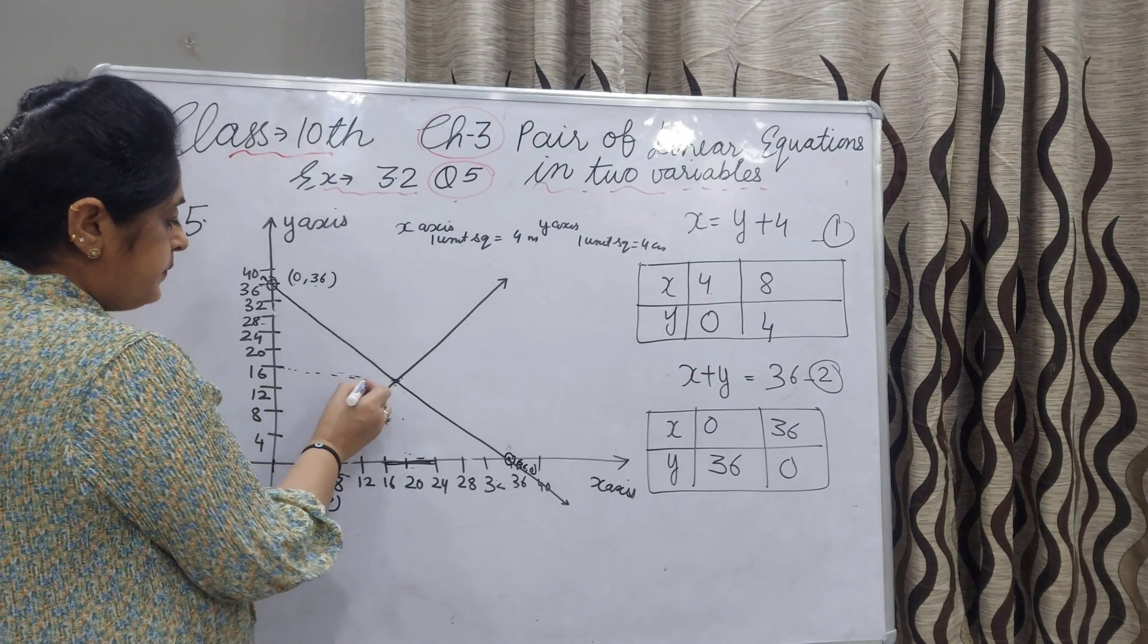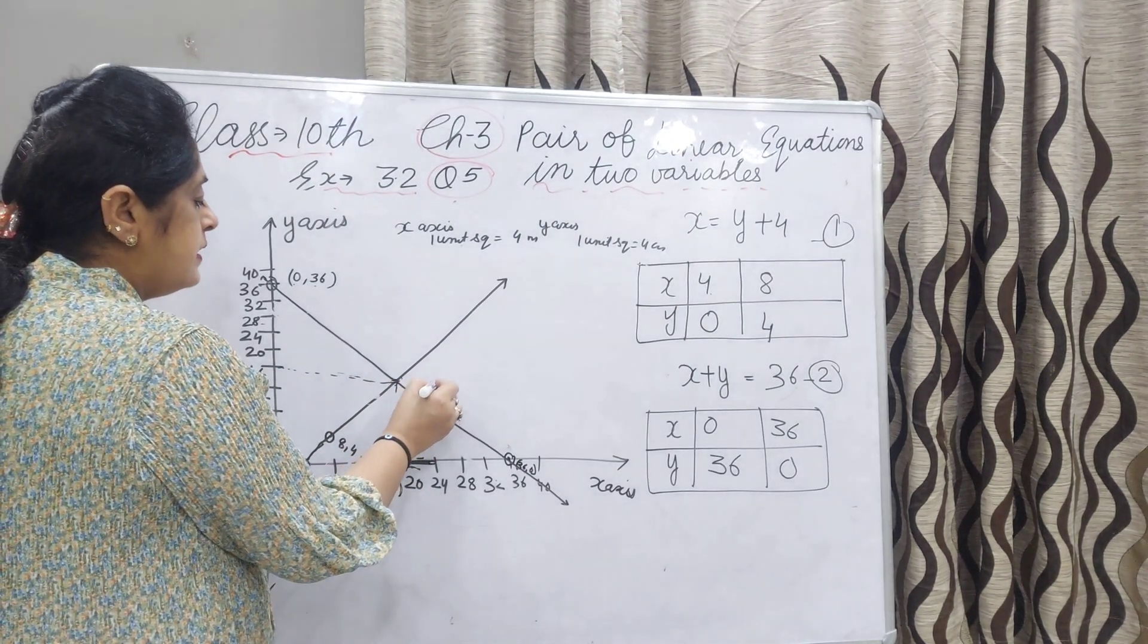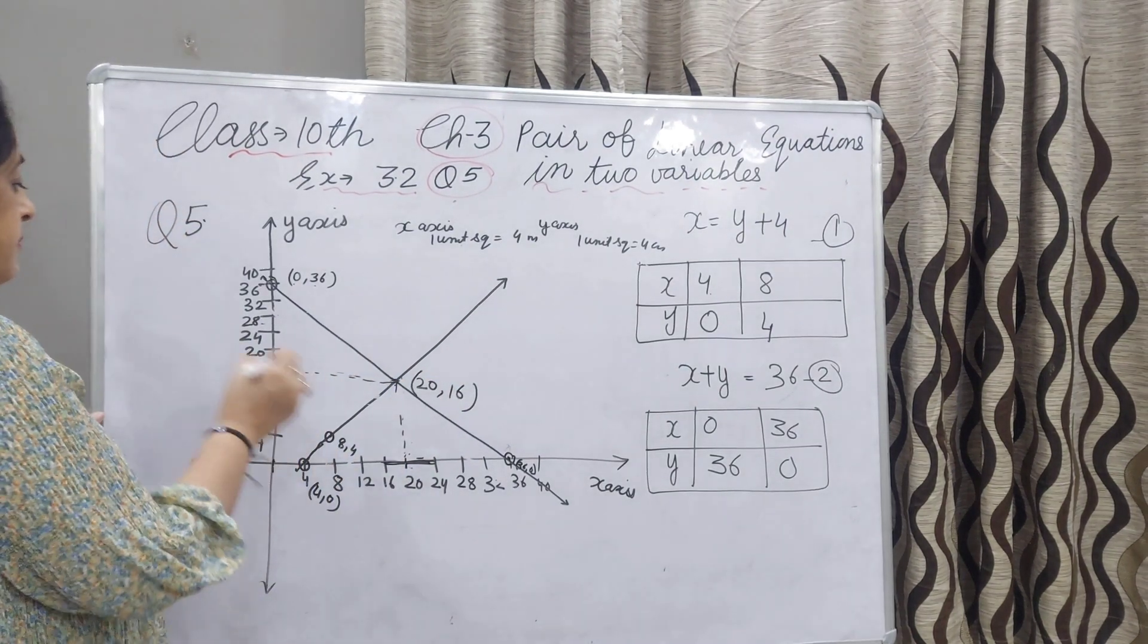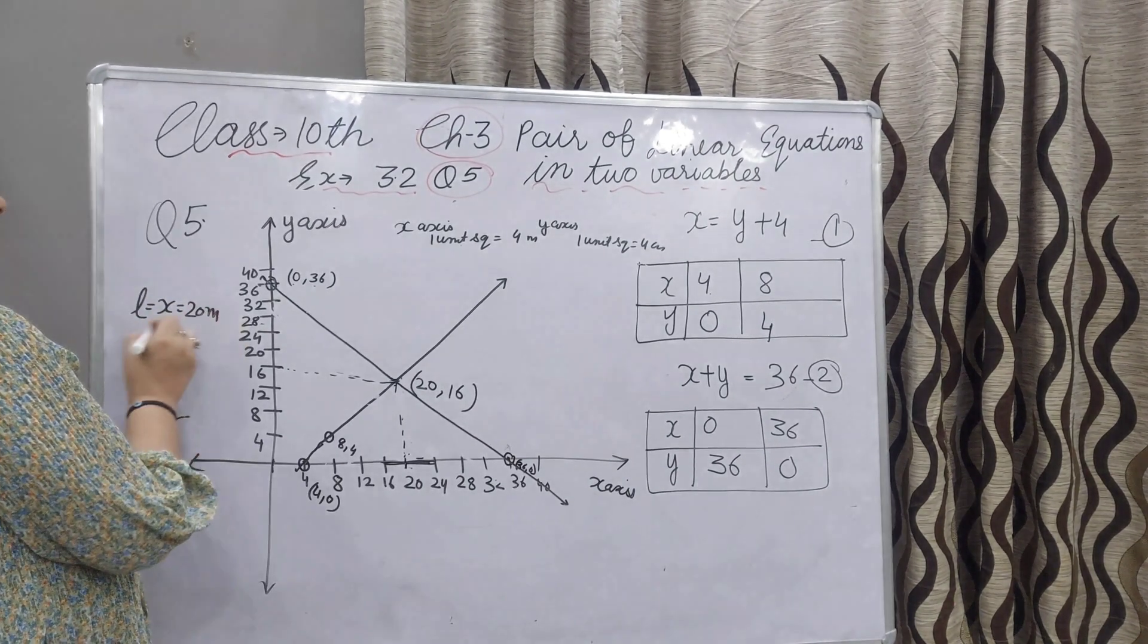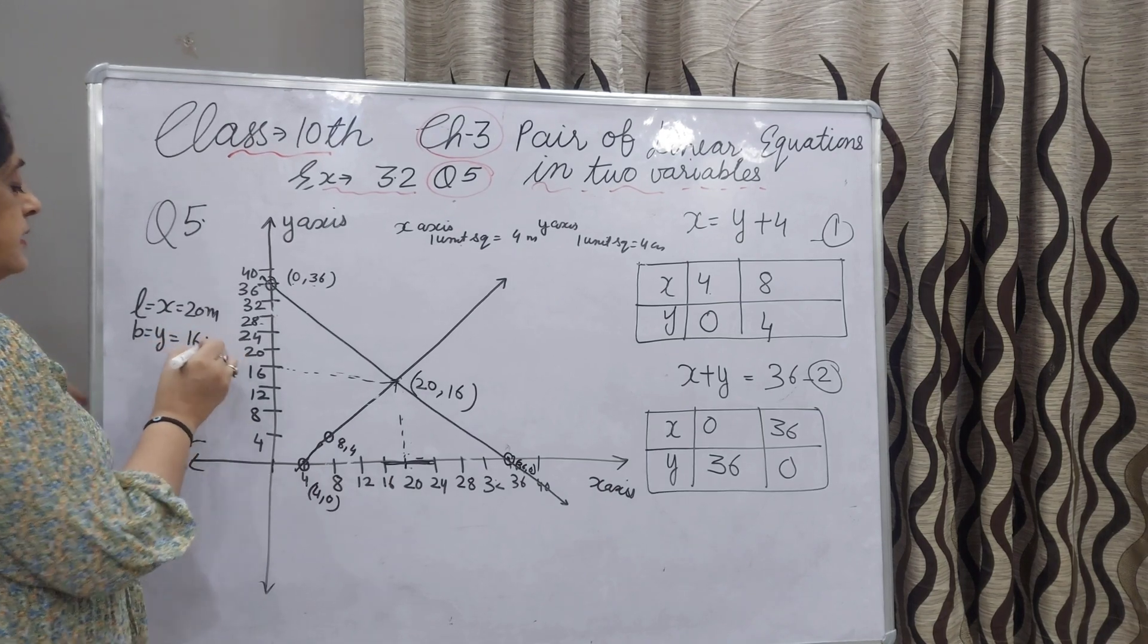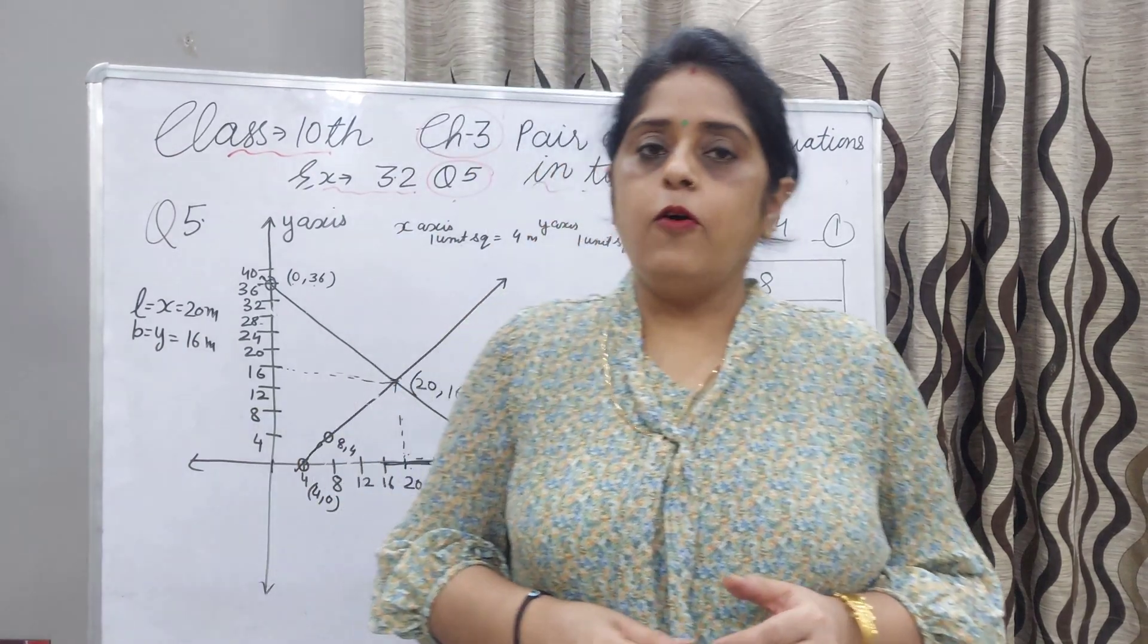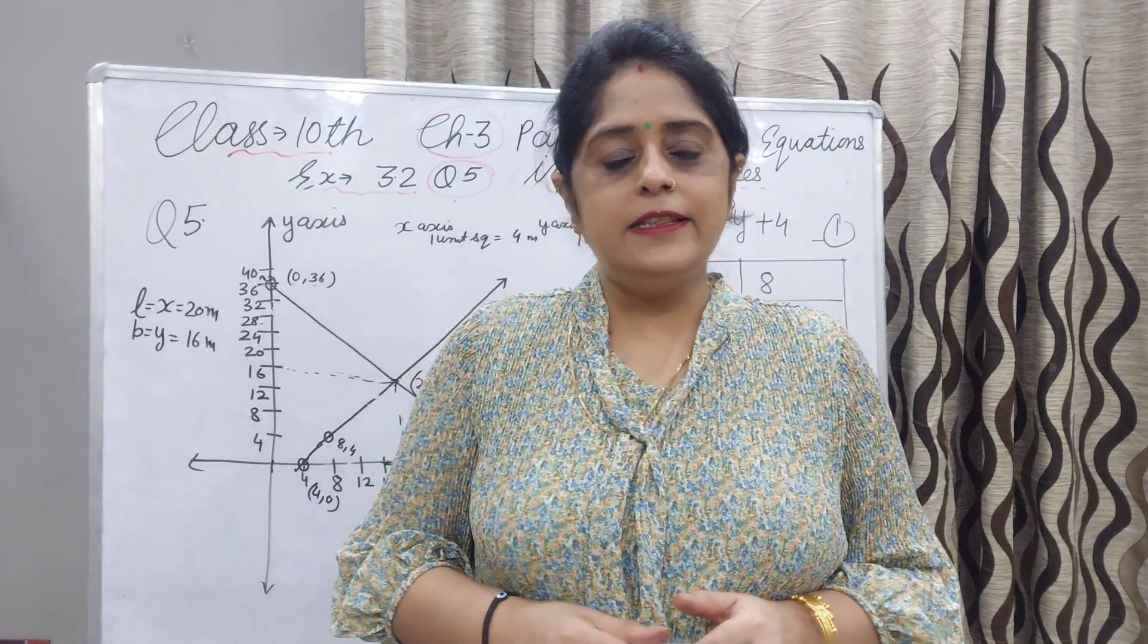Now you can check. Here x is 20 and y is 16. Means our length x is 20 meters, and breadth is equal to y, that is equal to 16 meters. That is the solution of the equation. You have got it. Hope you understood. Like and subscribe my channel. Thanks for watching.